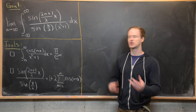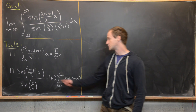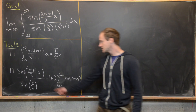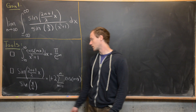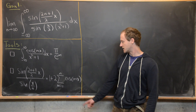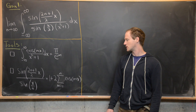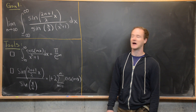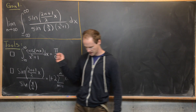The next tool is a trigonometric identity involving sine and cosine. We have sine of (2n+1)/2 · x over sine of x/2 equals 1 plus twice the sum as m goes from 1 to n of cosine(mx). This was established in a previous video so we won't repeat it here.